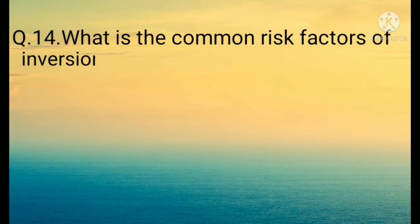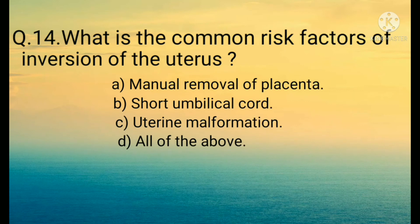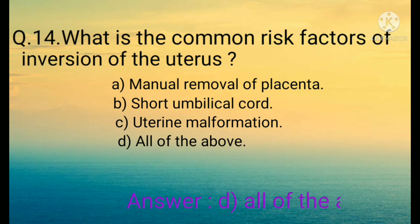Question number fourteen: What are the common risk factors of inversion of the uterus? Options are: A) Manual removal of placenta, B) Short umbilical cord, C) Uterine malformations, D) All of the above. The correct option is D) All of the above.